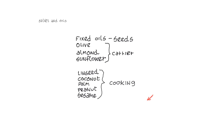Fixed oils come from seeds like olive, almond, and sunflower, and are common carrier oils for the more volatile essential oils. Other fixed oils like linseed oil, coconut, palm, peanut, and sesame are used in cooking.